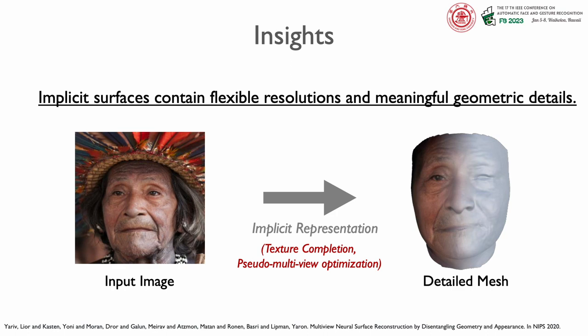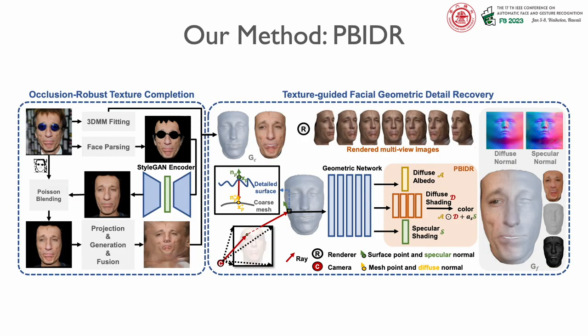For the input image, we first recover its UV texture map, and then use pseudo-multi-view optimization to recover the details. Specifically, given an input 2D image, we aim to restore a high-quality texture map by recovering externally occluded and self-occluded parts of the facial appearance. We first estimate a segmentation mask of the occluded regions and inpaint them in the original image space to get an unoccluded image, then complete the occluded texture by rotating 3D facial geometry and inpainting the self-occluded areas in UV space, similar to OSTEC. Now we have a high-fidelity texture and a coarse mesh as inputs.